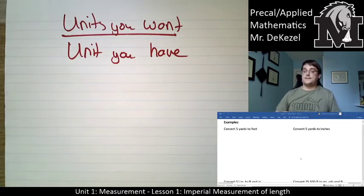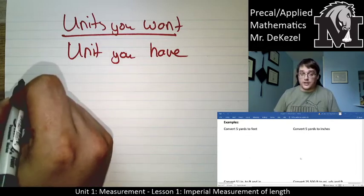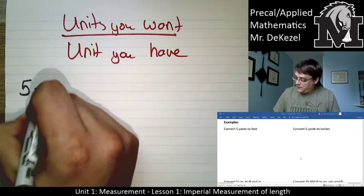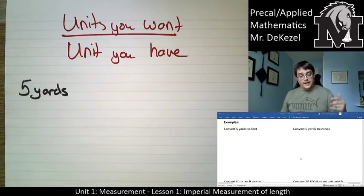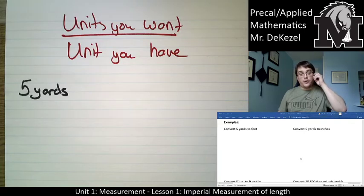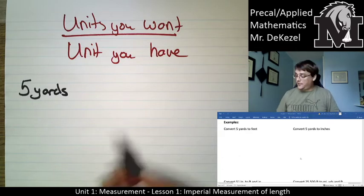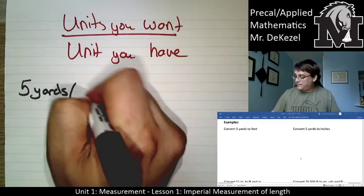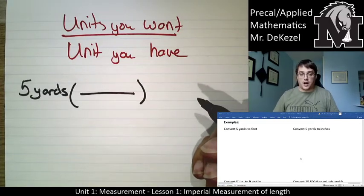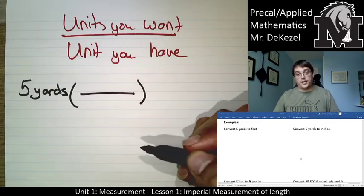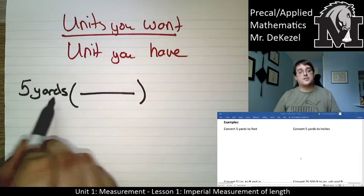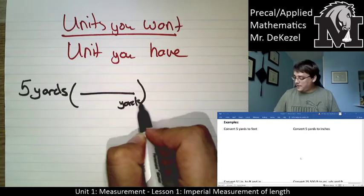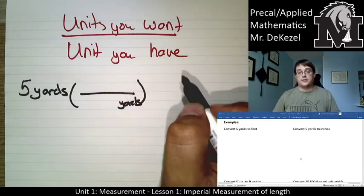Example: convert five yards to feet. I'm going to start by writing five yards. If we go back to page two, we know there are three feet in one yard. So when we are converting, we place the units so that the units we want go on top and the units we already have go on the bottom. The unit we have is yards, so yards goes on the bottom. The unit we want is feet, so feet goes on the top.